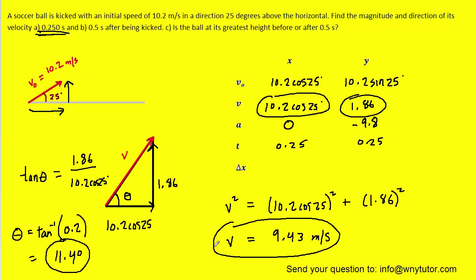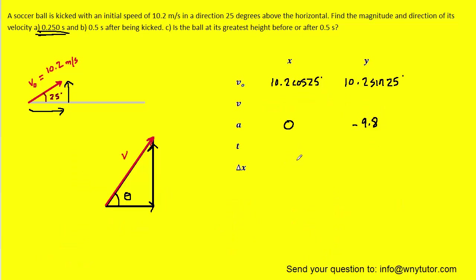We're going to move on to part B and do essentially the same thing, except we're changing the time to 0.5 seconds. We go back to our projectile motion table — the initial velocity stays the same, and we change the time to 0.5 seconds. By the same reasoning, the final velocity in the x direction remains 10.2 cos 25. We'll use the kinematics formula again to find the final velocity in the y direction.